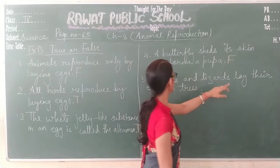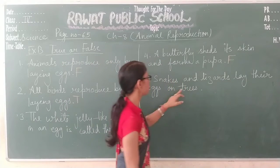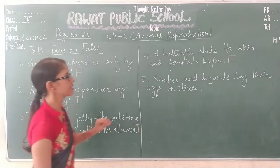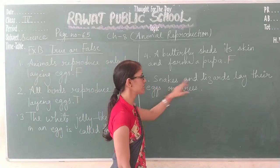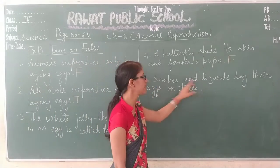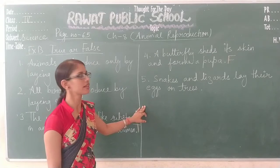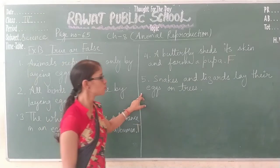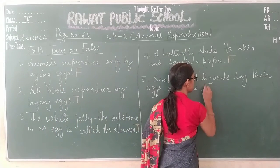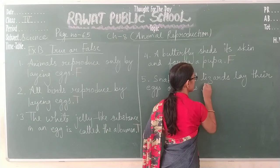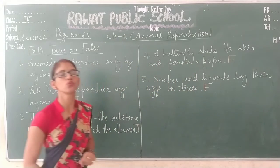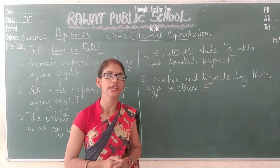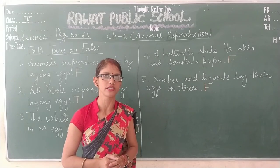Statement 5: snakes and lizards lay their eggs on trees. Snakes and lizards are reptiles, and they lay their eggs on the ground — not on trees. So this statement is false, and we write F. That is all about Exercise A and B. Thank you and have a nice day.